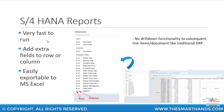The main advantage of running S4HANA reports is that they are much faster than your traditional ERP reports, mainly because of the way the universal journal ledger is structured and the hardware used in S4HANA. You can also switch between columns and rows in your reports. For example, in this screenshot I've shown the selection criteria where you can specify whether a profit center or cost center should be displayed in columns or in rows, and you can see your values accordingly.